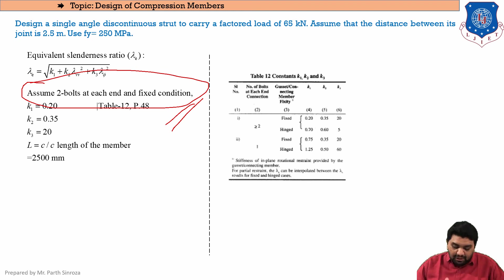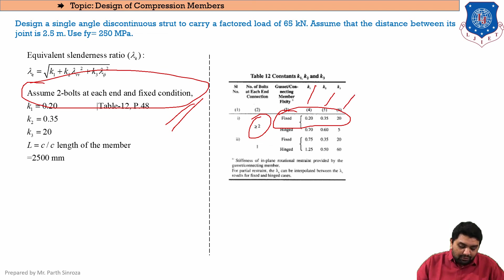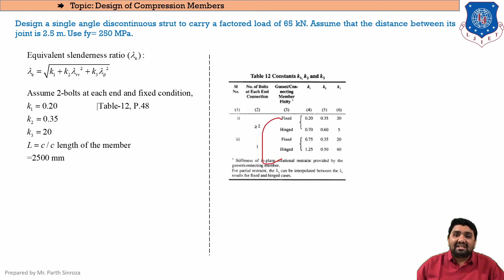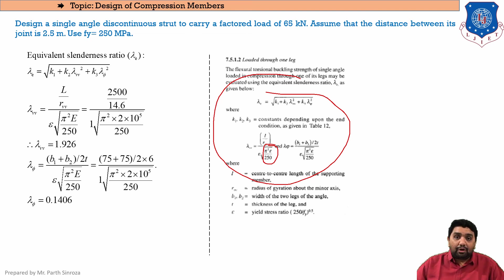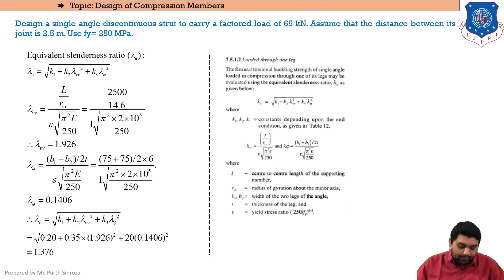From IS code page 48 for ≥ 2 bolts in fixed condition: k1 = 0.2, k2 = 0.35, k3 = 20. Using the equations from page 48, we calculate λvv = 1.926 and λφ = 0.1406. Note: the term π²ε in IS code is a misprint; it should be π²E (Young's modulus). Substituting all values, λe = 1.376.